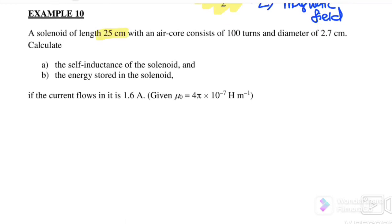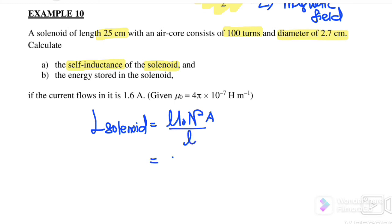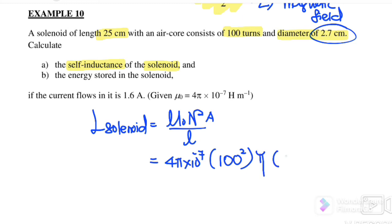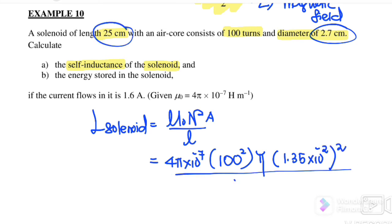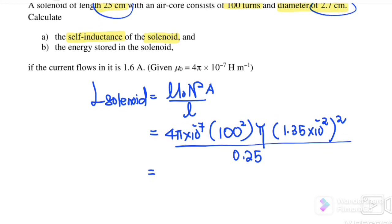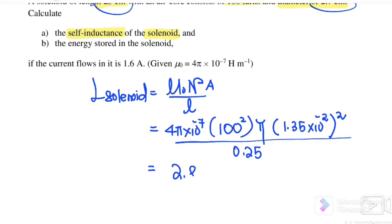For Example 10, a solenoid with a length of 25 cm and an air core consists of 100 turns and a diameter of 2.7 cm. Calculate the self-inductance using L equals μ₀N²A over length. Here, N is 100, area equals πr² with r equal to 1.35×10⁻² m, and length is 0.25 m. The self-inductance is 2.88×10⁻⁵ H.